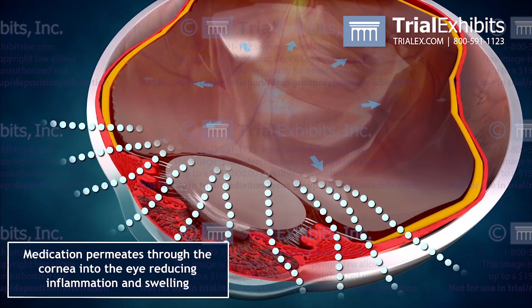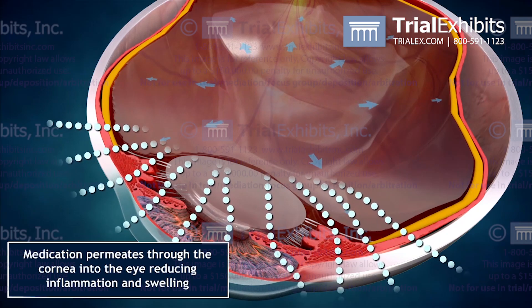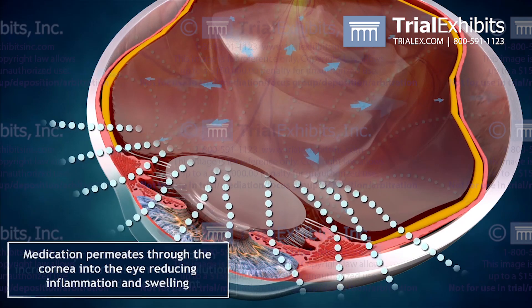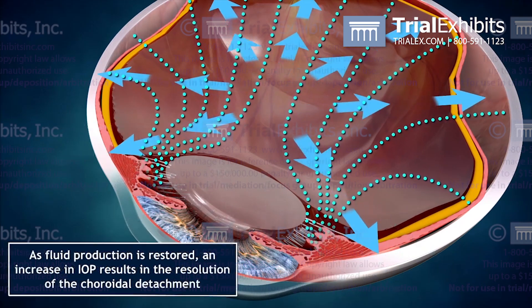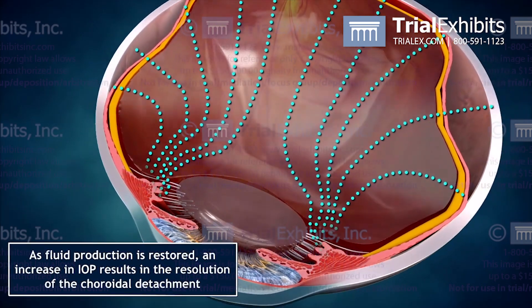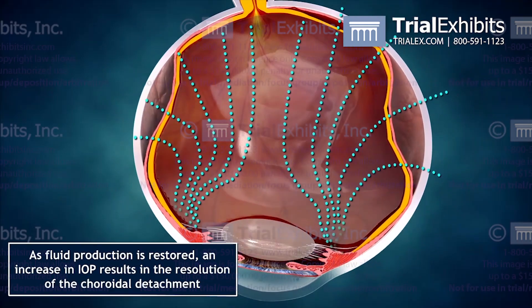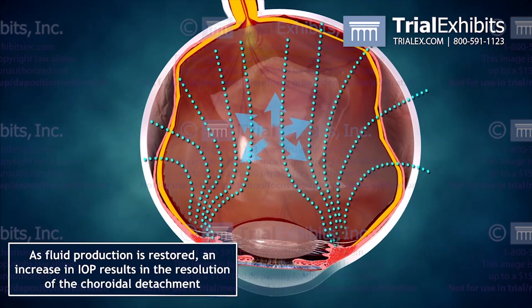This medication can penetrate down into the ciliary body, reducing the swelling and restoring the production of fluid. This rapidly results in a restoration of proper pressure inside the eye.